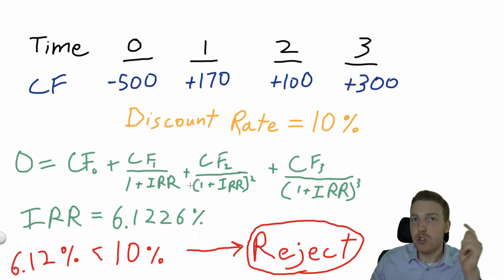The key thing to know here is that because 6.12% is less than 10%, our IRR is less than our discount rate or our required rate of return, so we're going to reject this project.